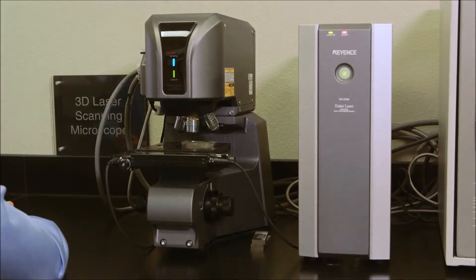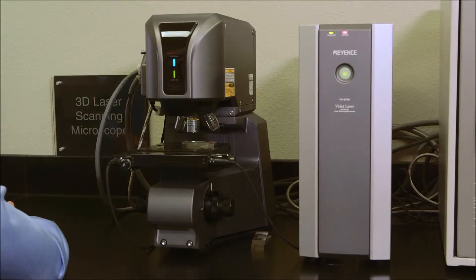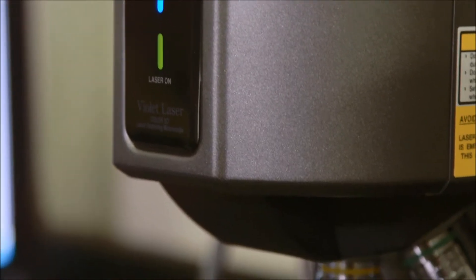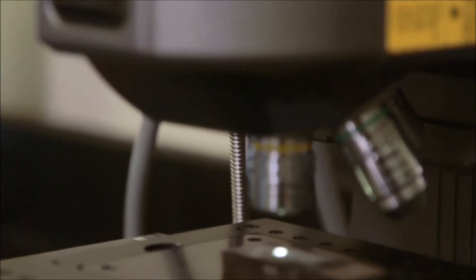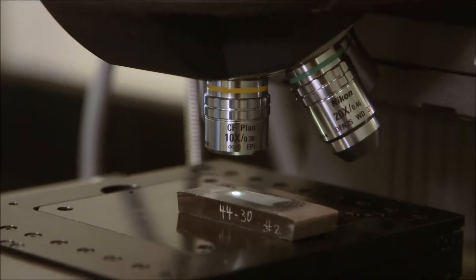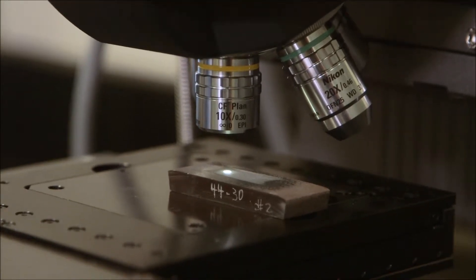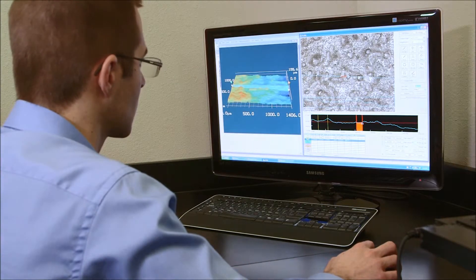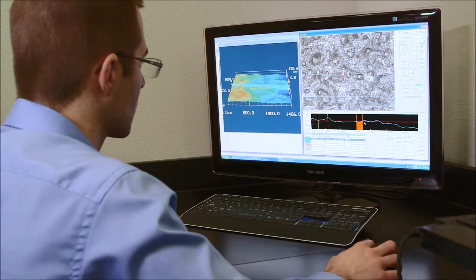Another very unique piece of equipment we have in our microscopy room is our Keyence VK9700 3D laser scanning microscope. And what this microscope can do that our SEM can't do, that our Axiovert 40 metallograph can't do, what our stereo microscope can't do is this microscope can basically characterize the surface topography of a worn surface from the field.